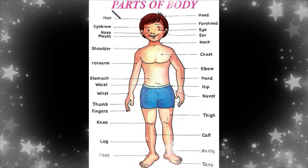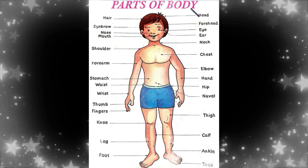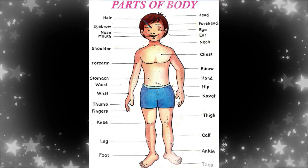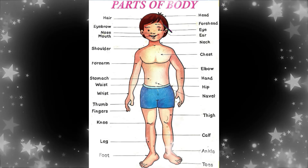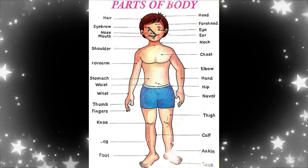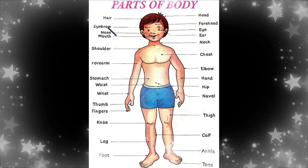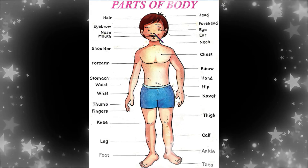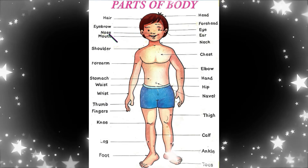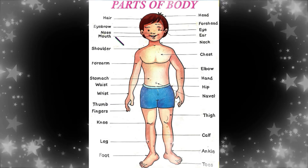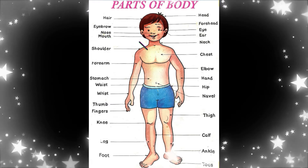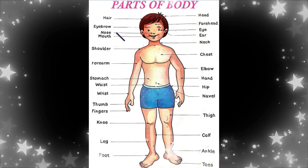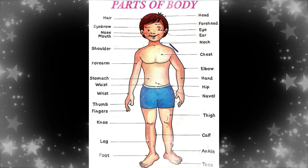Hi children, today we're going to learn parts of the body. Head, hair, this is forehead, eyebrows, eyes, nose, mouth. We have two ears. Neck.